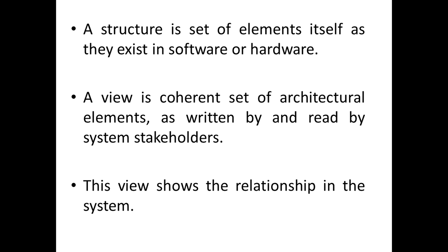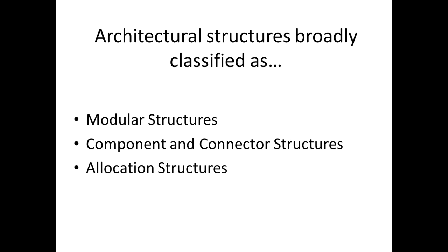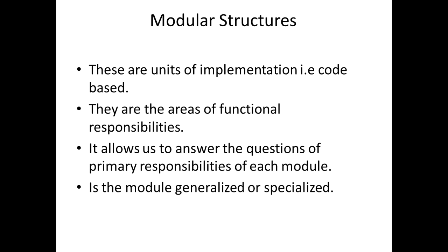The structure shows the relationships, and through those relationships it identifies how the process flow takes place. Architectural structures are classified into three types: modular structures, component-connector structures, and allocation structures.